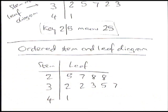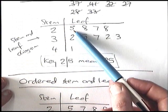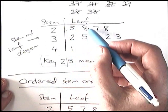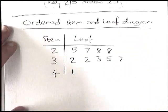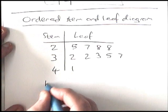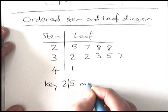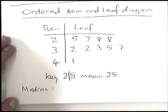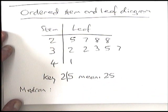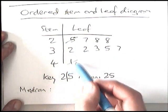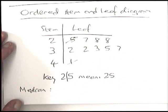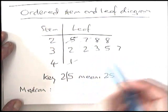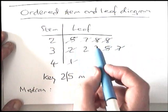Once you have the ordered stem and leaf, you can find the median by crossing off values from each end. Add a key: 2 | 5 means 25. Now cross off the smallest and biggest — 25 and 41 — then cross off the next smallest and biggest: 27 and 37. Continue crossing off smallest and biggest pairs until you've worked through all the values.